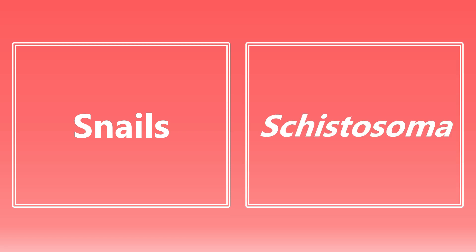The first one here: snails. If you see snails on the exam, the microbe I want you to be thinking of is schistosoma — more specifically, schistosoma mansoni and schistosoma haematobium. If you see snails on the exam, just know that that is associated with schistosoma.